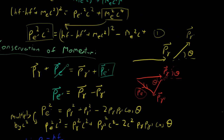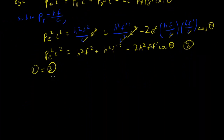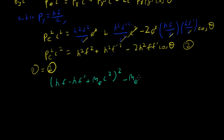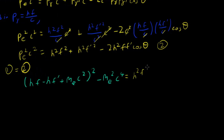So what's equation 1 again? Equation 1 was hf minus hf prime plus mₑc squared. Let's bring it all the way down. From the equation before, we have hf minus hf prime plus mₑ²c² minus mₑ²c⁴, and that equals our current one, which is h²f² plus h²f'² minus 2h²ff' cos θ.